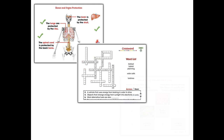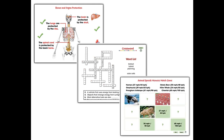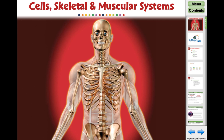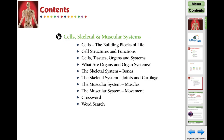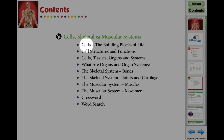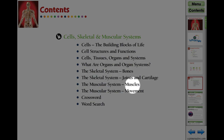Our highly interactive and engaging curriculum-based lesson plans inspire student interaction and are ideal for differentiated learning. Cells, Skeletal, and Muscular Systems is the first of three interactive digital lesson plans in the Human Body series. Our 80-screen interactive lesson features comprehensive interactive activities covering topics such as cells, bones, and muscles.